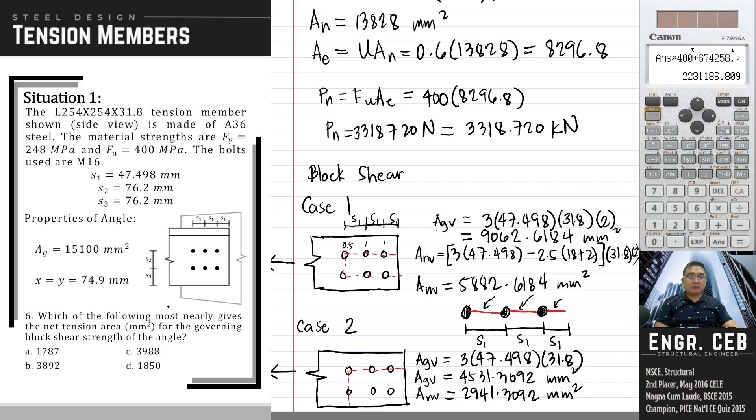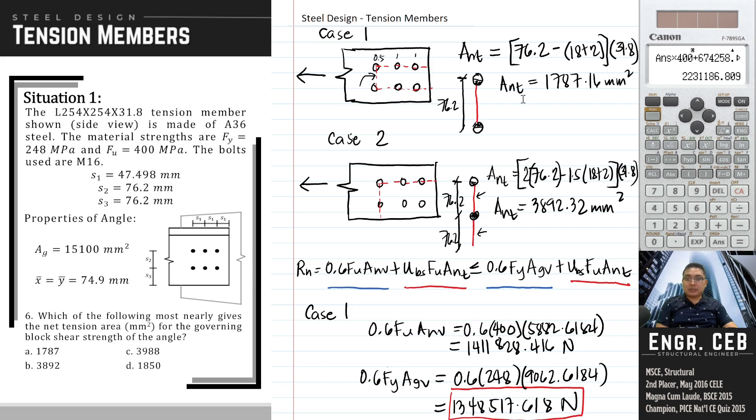Problem 6. Which of the following most nearly gives the net tension area for the governing block shear strength of the angle? We know already that the governing block shear strength is for case 1. Therefore, we choose ANT of case 1, which is 1787.16. The answer is A.